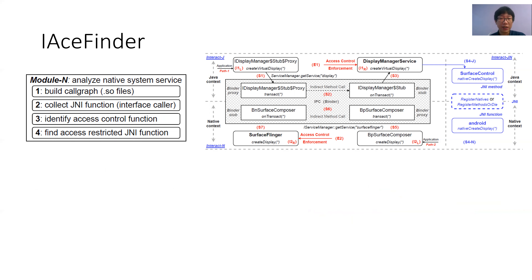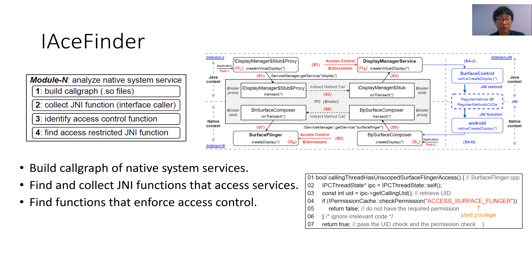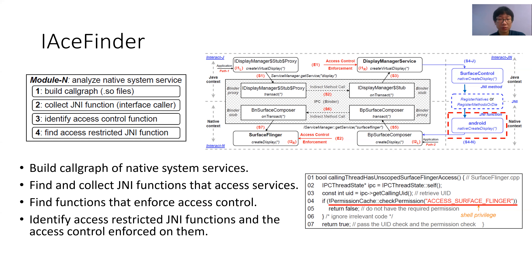Module N takes four steps to correlate access control enforcing native system services to JNI functions. First, it uses a call graph of the services to find the access control enforced in native system services. Second, to find JNI functions that correspond to JNI methods collected by Module J, it analyzes the registration process of JNI interfaces and maps each JNI method to its JNI function. Moreover, it traverses the call graph to collect JNI functions that invoke remote interfaces on native system services, for the purpose of identifying access-restricted JNI functions whose execution leads to enforcement of access control. Third, it analyzes each function call graph to find access control functions that enforce access control, such as the caller of checkPermission in line four of the code path, for the sake of determining the access control enforced on access-restricted JNI functions. Fourth, it traverses the call graph from each JNI function to the access control functions to identify the access-restricted JNI functions and the access control enforced on them.